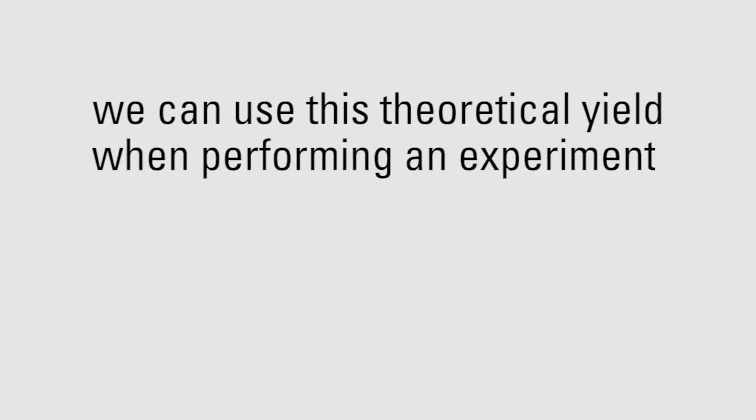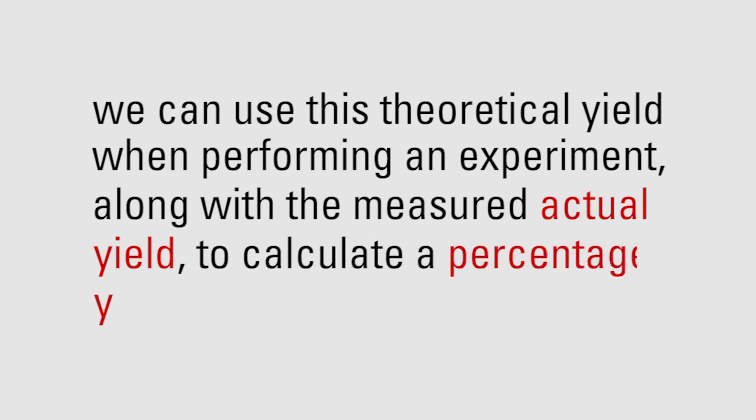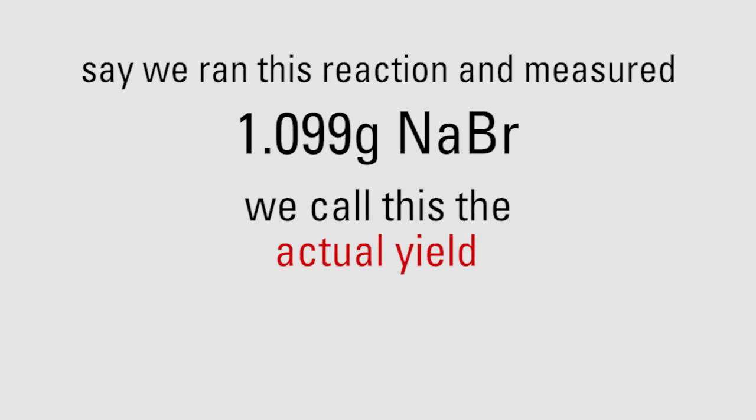We can use this theoretical yield when performing an experiment, along with the measured actual yield, to calculate the percentage yield. Say we ran this reaction and measured 1.099 grams of sodium bromide product. We can call this the actual yield.